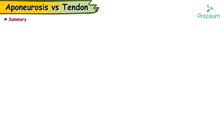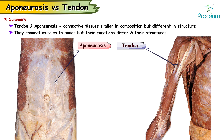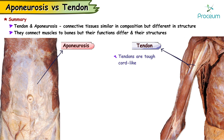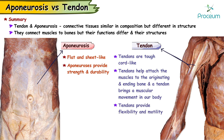Summary. The tendon and epineurosis are both connective tissues which are similar in composition but are different in structure. They both connect muscles to bones but their functions differ and thus their structures. Tendons are tough and cord-like, while epineurosis are flat and sheet-like, and are found all over the body. Tendons help attach the muscles to the originating and ending bone and are what finally bring about muscular movement in our body. Epineurosis provides strength and durability while tendons provide flexibility and motility.